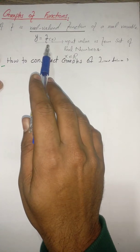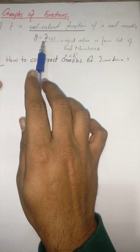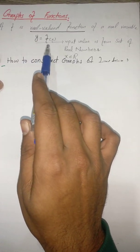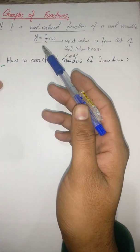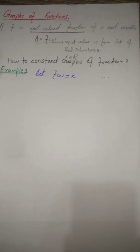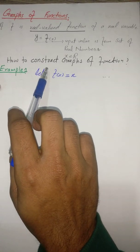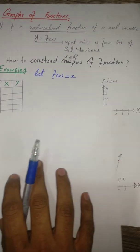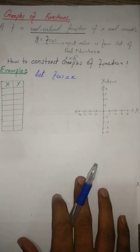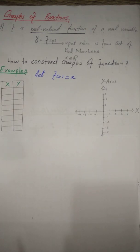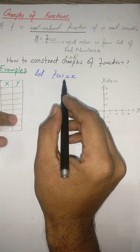When we say our function is a real-valued function, we construct our graph on the XY plane — also called the Cartesian plane or coordinate plane. Now let's construct the graph. Suppose we have a function f(x) = x.